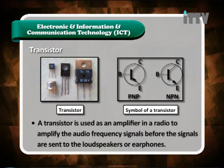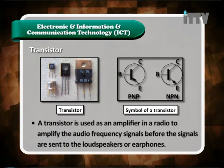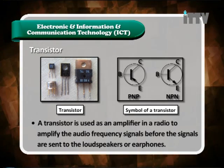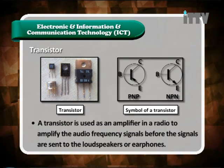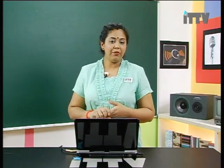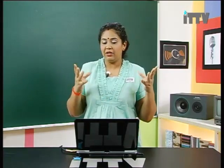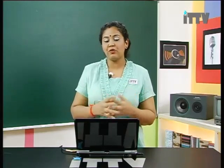Here is a picture of a transistor and the symbol of a transistor. A transistor is used as an amplifier in a radio to amplify the audio frequency signal before the signals are sent to the loudspeaker or earphone. The function of a transistor is to make the audio signal louder — to amplify it — so that we can hear it through the speakers of the radio.